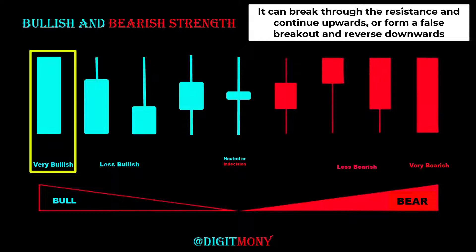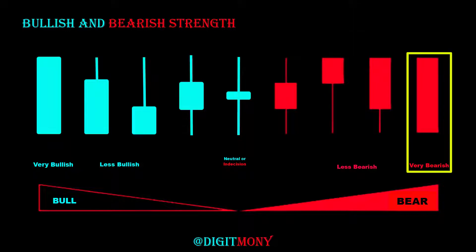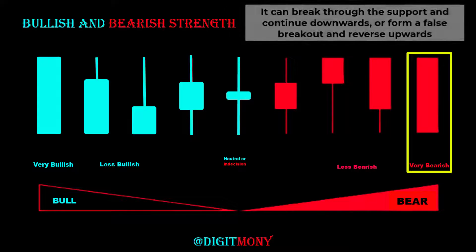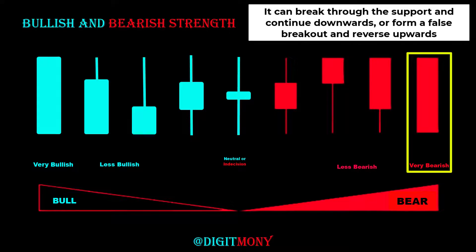Similarly, when a bearish momentum candle forms at key resistance, it shows that heavy selling presence has entered the market, and if it forms at key support level, it can break through the support and continue downwards, or form a false breakout and reverse upwards.